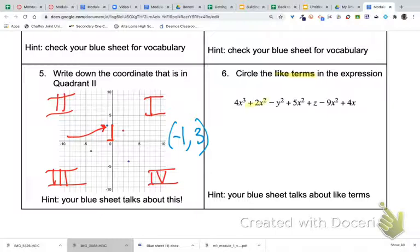...plus 2x squared, plus 5x squared, and minus 9x squared. And that's because they all have the same variable and the same exponent. Much like we're not going to include this minus y squared because it has a different variable, different letter that we're using to represent values.